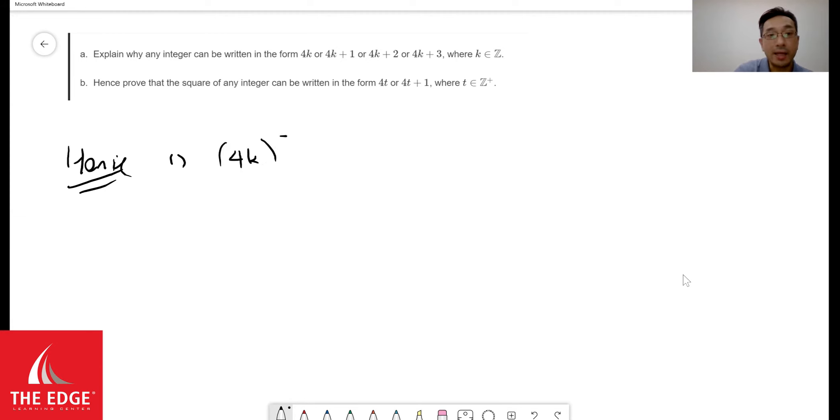If I then square that because we're asked to find the square of any integers, we know that can now be written as 16k squared. Now remember, the key is that we need to be able to write this as some kind of 4 times t. Not too bad, because I can write this as 4 times 4k squared.